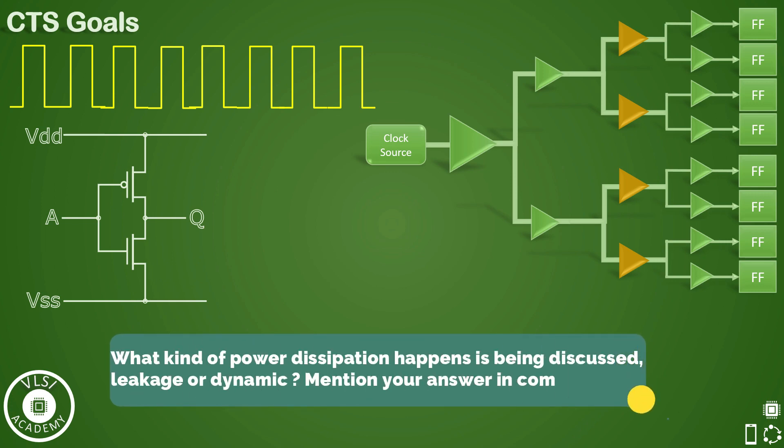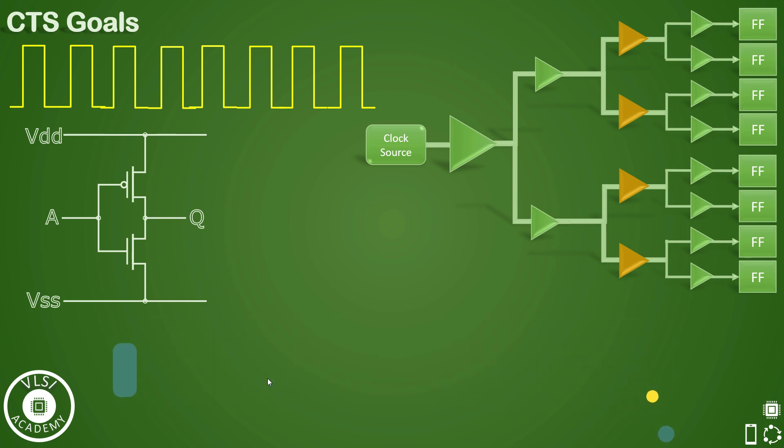Because of constant switching, the power dissipation component in each buffer and inverter will increase. And that is not good for the design. On top of this, there are a lot of buffers and inverters in the CTS that we already know.